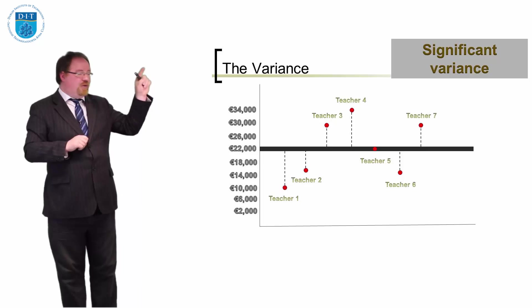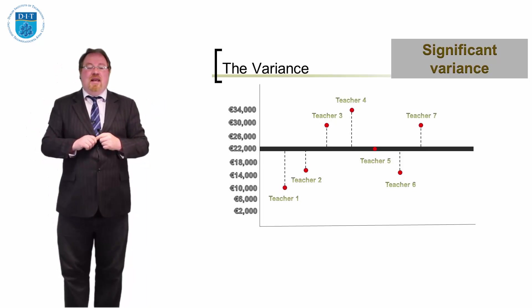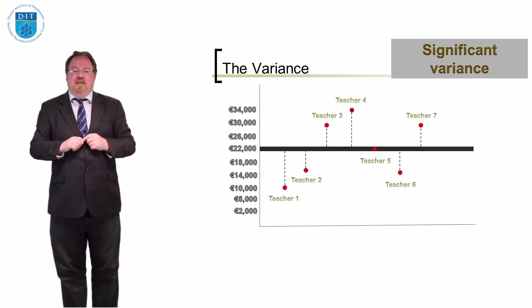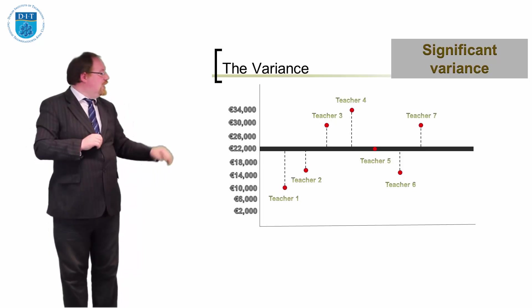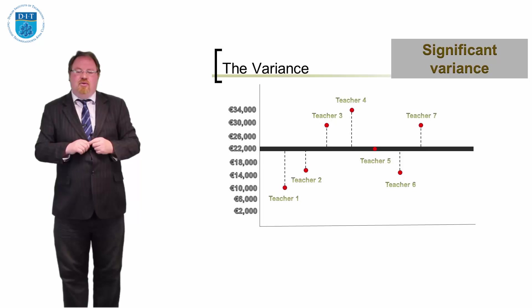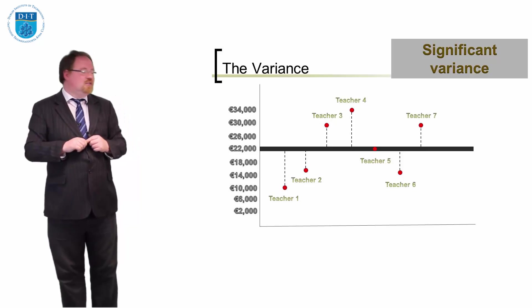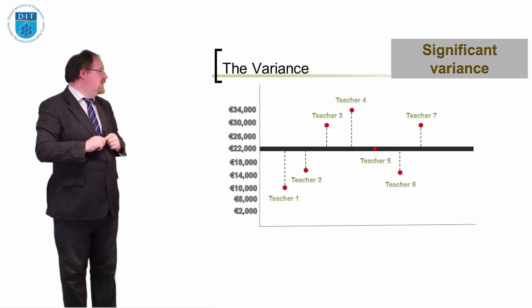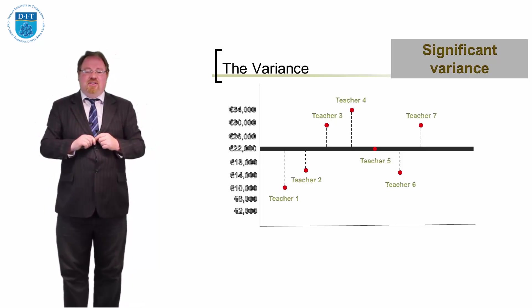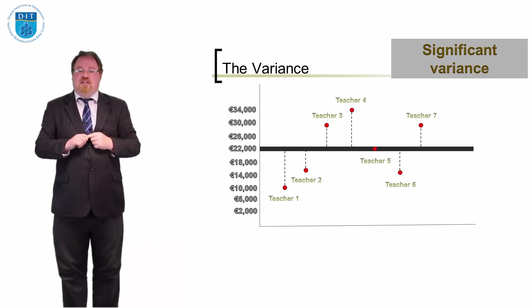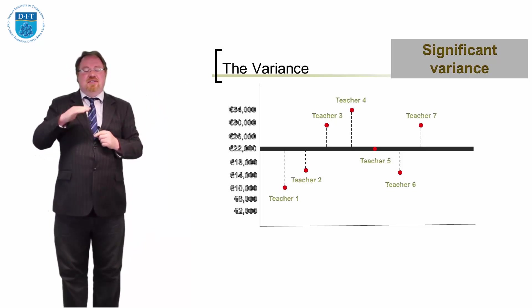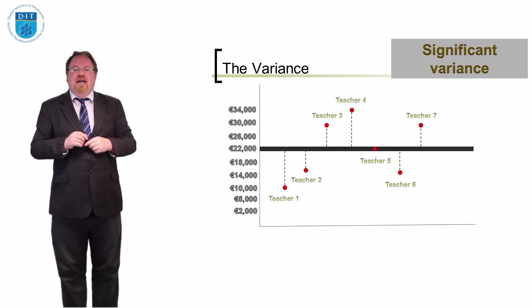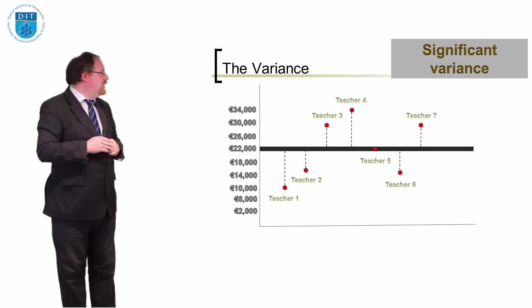So in this graph what we're showing is seven teachers. Teachers three, four and seven are well above the average, the mean. They're on 34, looks about 30 and 30. And there's a couple of teachers below. Teacher two and five look to be on about 14,000 a year. And teacher one seems to be on 10,000 a year. And there's only one teacher, teacher number six, who's actually making 22,000 a year. So there's a lot of variation between actual real people salaries and the mean that we're quoting here.